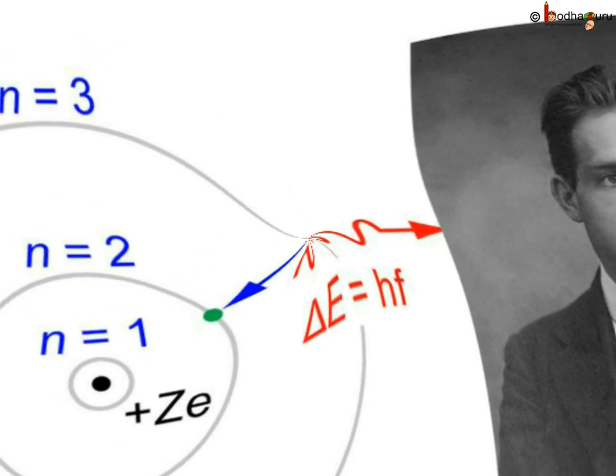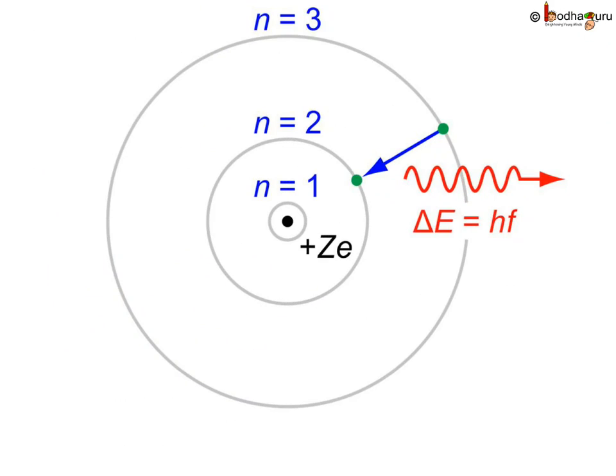You know, scientist Max Planck said that energy of electromagnetic radiation emitted or absorbed is product of H and F, where F is the frequency of the radiation and H is Planck's constant.